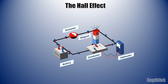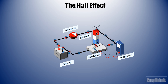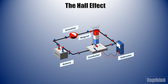This creates an electric field in the opposite direction of the applied electric field, which generates a potential difference across the conductor. This potential difference is known as the Hall voltage.